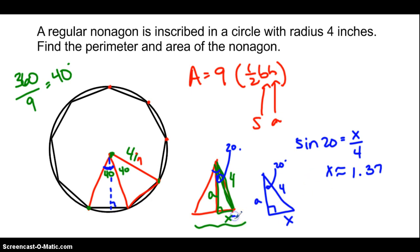So if X is 1.37, what does that mean is the length of our base? Well, remember that each one of these we could call X. So if we do that times 2, we should get 2.74, about.